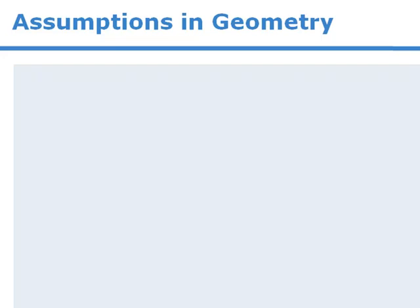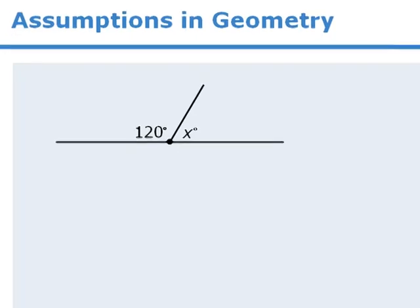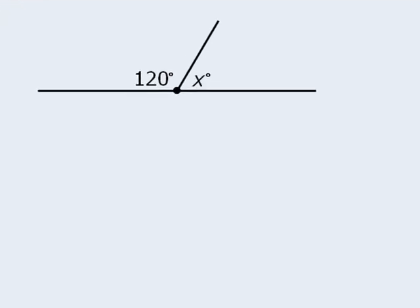In an earlier lesson, we examined a question similar to this one. From the given information, we can deduce that the other angle here is 60 degrees. Now notice that this calculation is based on the assumption that this angle here is 180 degrees. But is this a reasonable assumption?